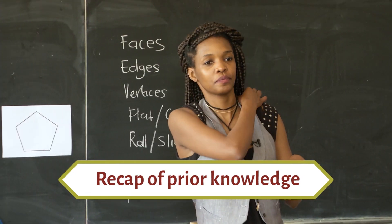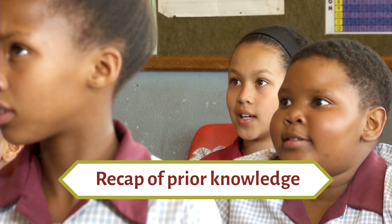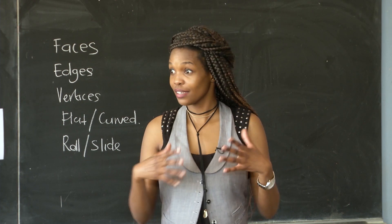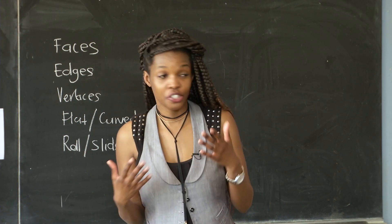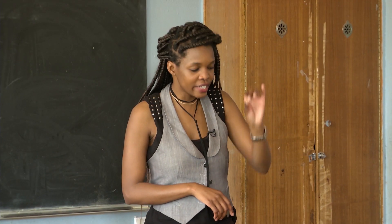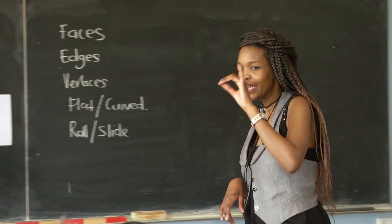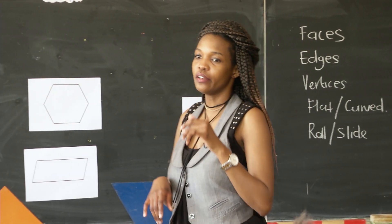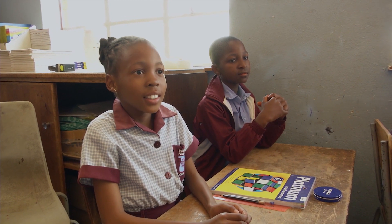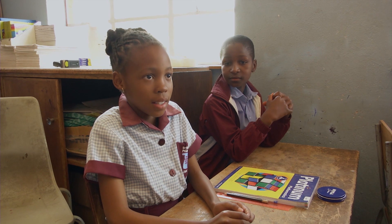Anissa? A 2D shape is a flat shape. So a 2D shape is a flat shape. What is a 3D object? A 3D object is a shape that you can see all the sides.